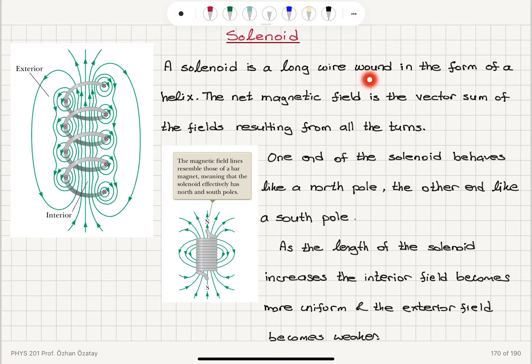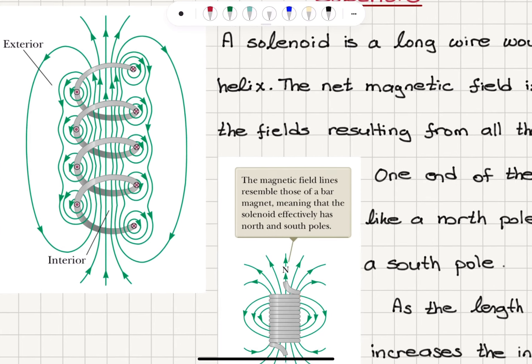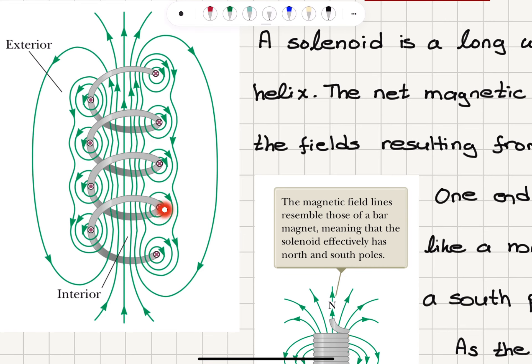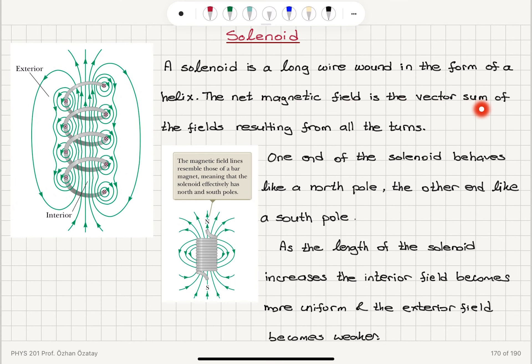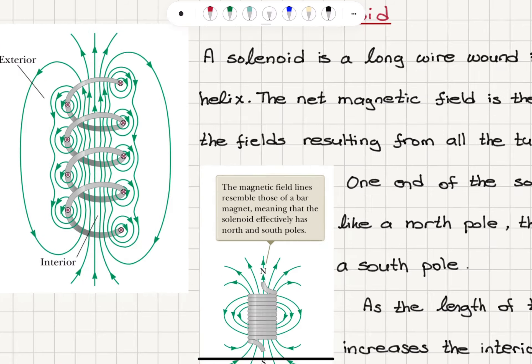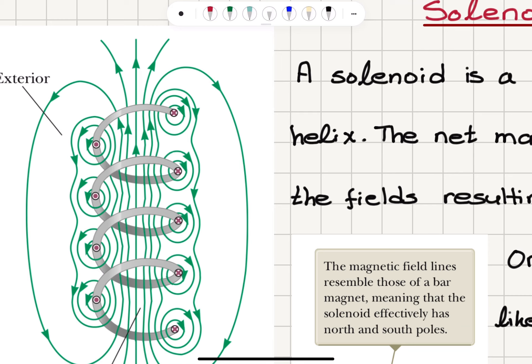A solenoid is a long wire wound in the form of a helix. The net magnetic field is the vector sum of the fields resulting from all the turns. Considering current flowing in and out of the wire, for all these current loops, using the right-hand rule, the four fingers curl in the direction of the current and the magnetic field lines point upward inside the solenoid.